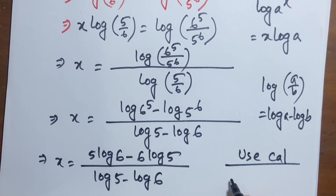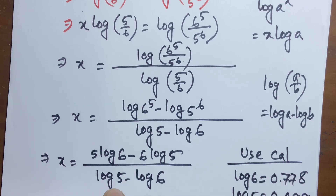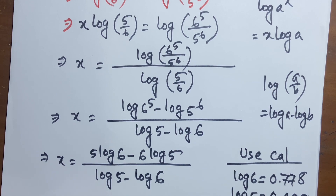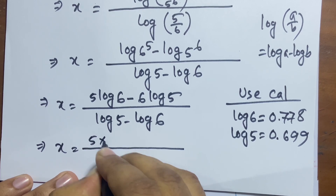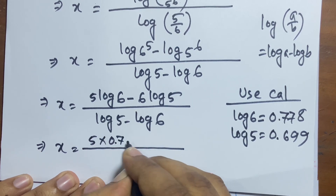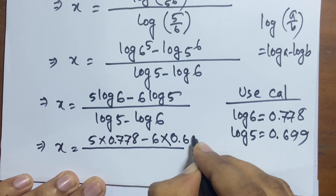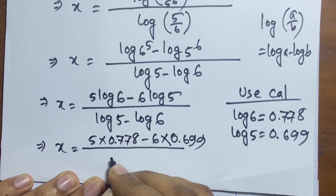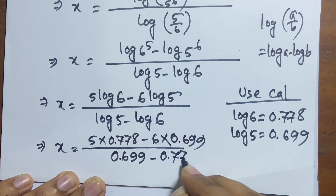Using a calculator: log 6 = 0.778 and log 5 = 0.699. Substituting these values: x = (5 × 0.778 − 6 × 0.699) / (0.699 − 0.778).